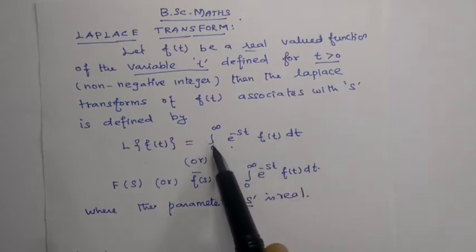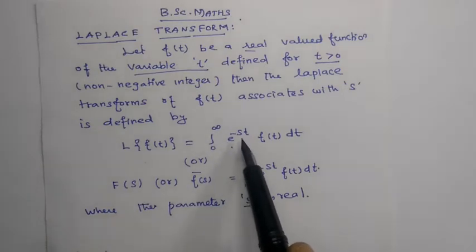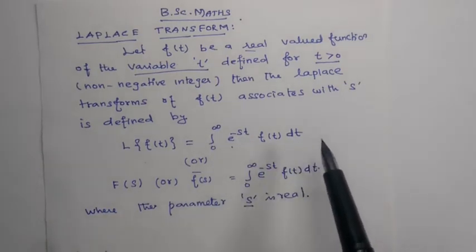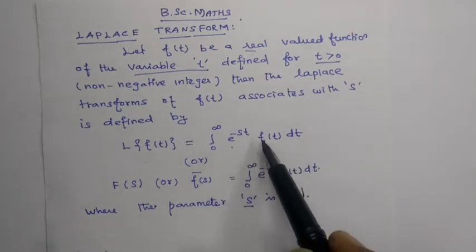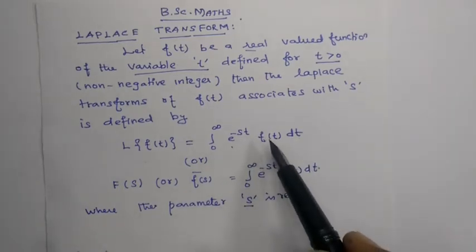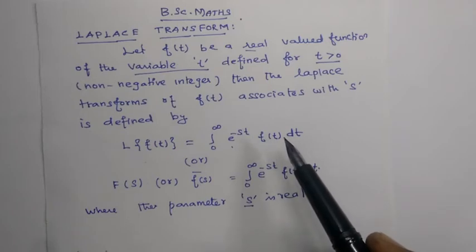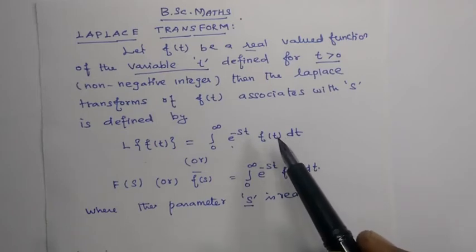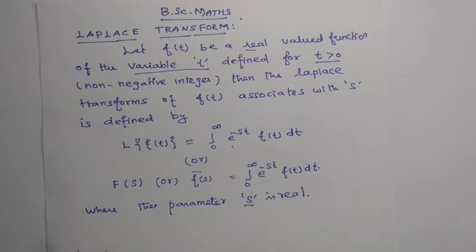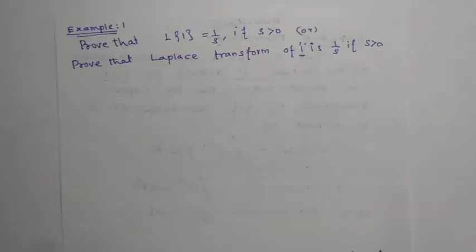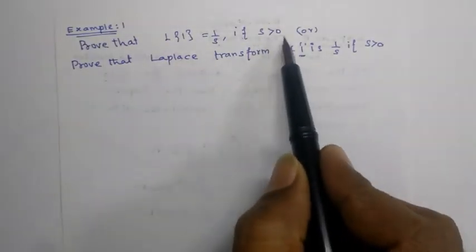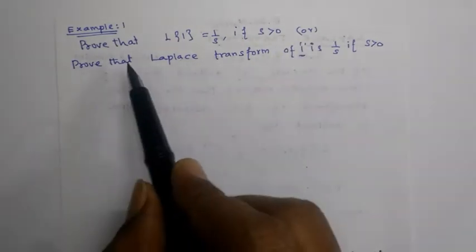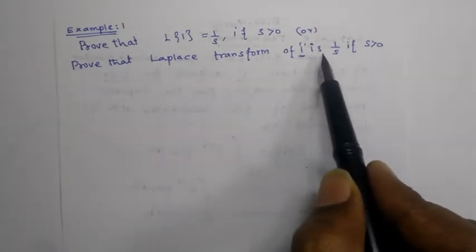If s is greater than 0, the integral over 0 to infinity of e to the power minus s t, f of t, dt converges for some values of s. Also we can work out that in this case, the Laplace transform of 1 is 1 by s.